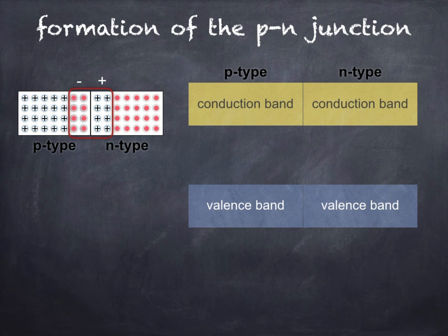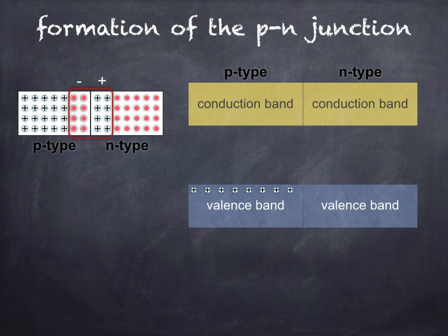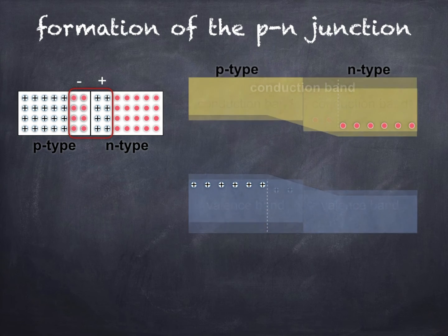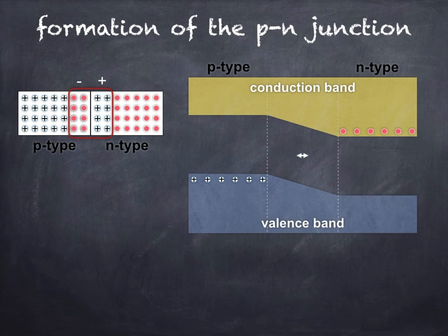Now let's turn our attention to the diagram on the right. Here we can see the energy band model of a P-type semiconductor, where conduction is due to the motion of positive holes within the valence band, and N-type semiconductor, where conduction is due to the motion of negative electrons within the conduction band. When a P-N junction is formed, the energy bands warp. The region in the middle is the depletion layer. Fully explaining the energy band model of a P-N junction goes well beyond higher physics, so I'll not attempt it here.